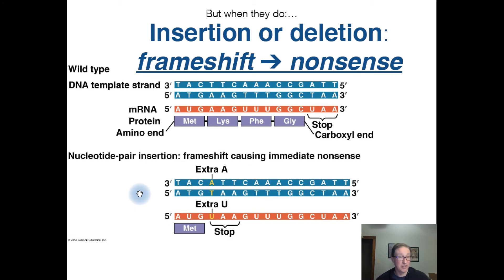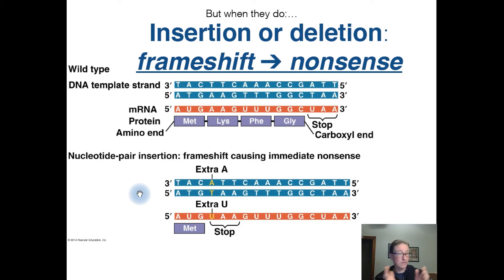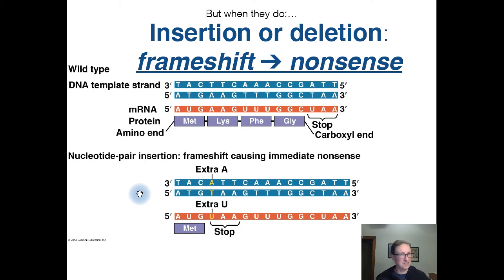Things can get even weirder. Those were simple point mutations, but in other cases there can be an insertion of an extra base into the DNA or deletion of a base. When there's an insertion or deletion, that type of mutation is referred to as a frameshift mutation, because it shifts the reading frame for those three-base codon groups. It's like reading a sentence where the spaces suddenly appear at different points in the words, and you wind up with something that doesn't make sense anymore.